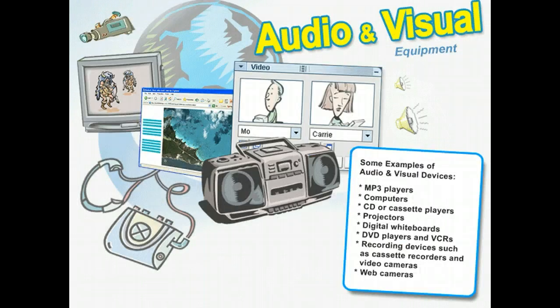There are many kinds of audio and visual equipment available for you to use in the classroom. These technologies include audio devices such as a cassette or CD player, and video devices such as a VCR, DVD player, webcam, projector, or digital whiteboard. They can also include audio and video recording devices such as video cameras or cassette recorders.